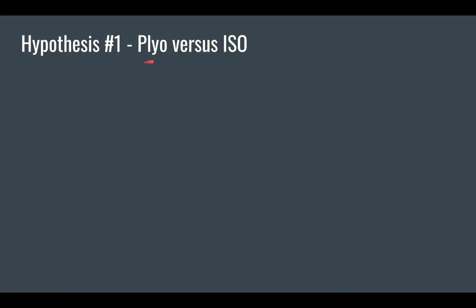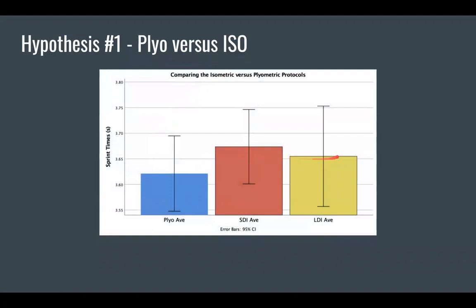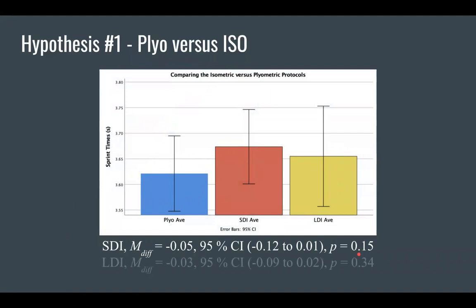Now, looking at hypothesis 1, determining how the plyometric compared to the isometric protocols. What we can see here with these overlapping error bars is that there were not significant differences between the groups. When we're looking at plyo against the short duration protocol, the plyometric group was about five hundredths of a second faster, though insignificantly different. And the long duration was about three hundredths of a second faster and insignificantly different. Therefore, based on the lack of difference between these groups, we can accept this first hypothesis that our isometric protocols performed as well as the plyometric protocols in this study.